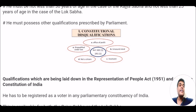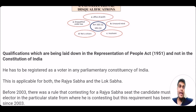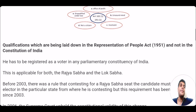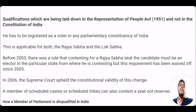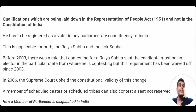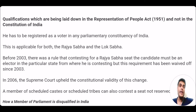Parliament has enacted the Representation of People Act 1951, and these qualifications are listed in the RPA 1951 and not in the constitution of India. The very first qualification listed there is that for being eligible to be a member of parliament, the candidate should be registered as a voter or elector in any parliamentary constituency of India. This is applicable for both Rajya Sabha and Lok Sabha.